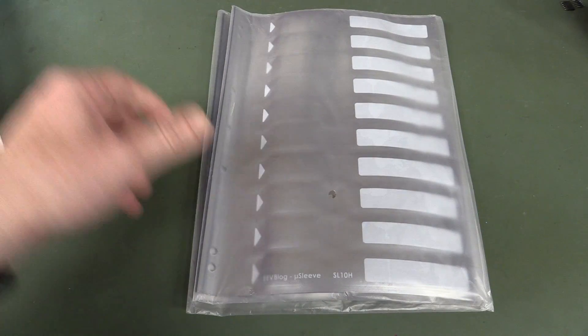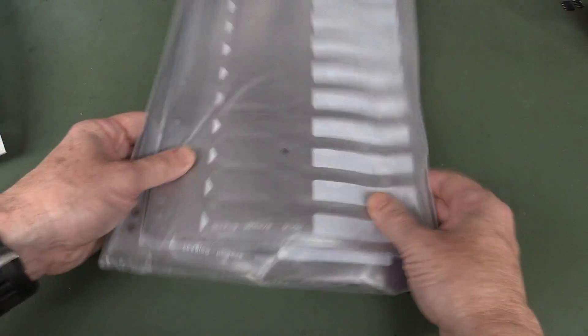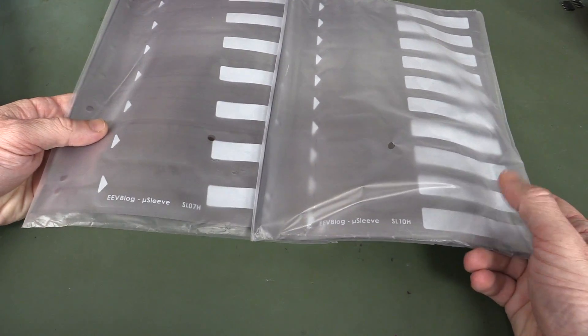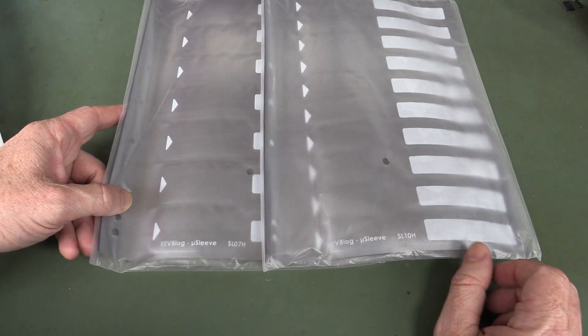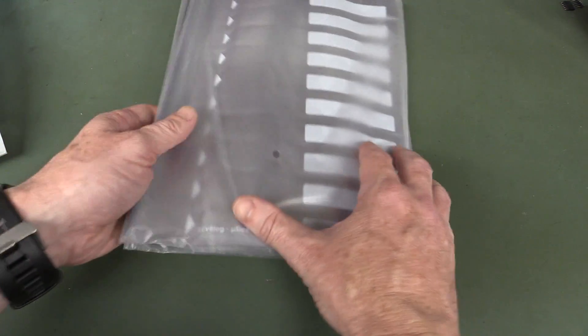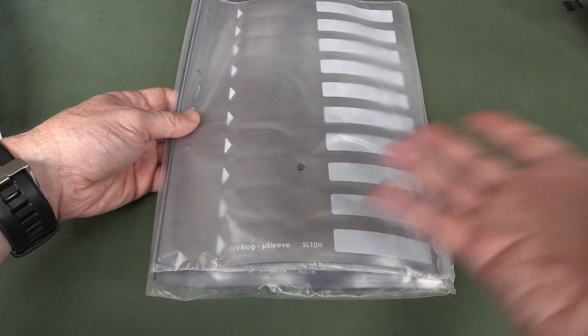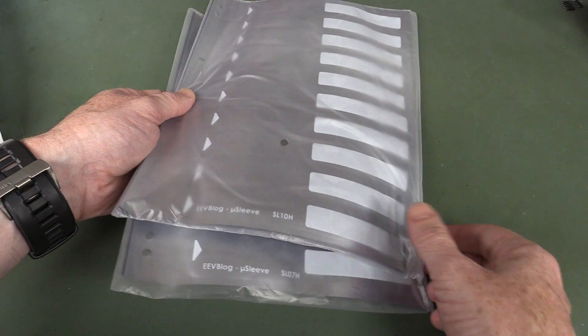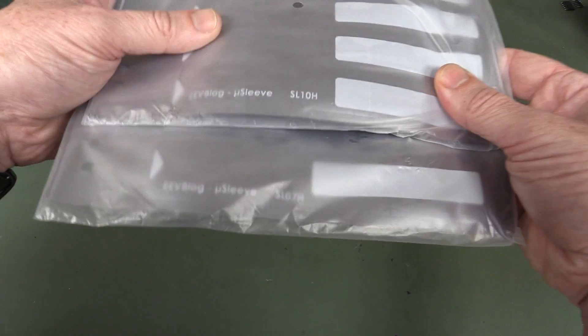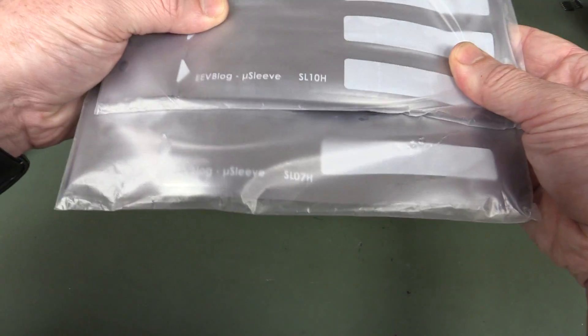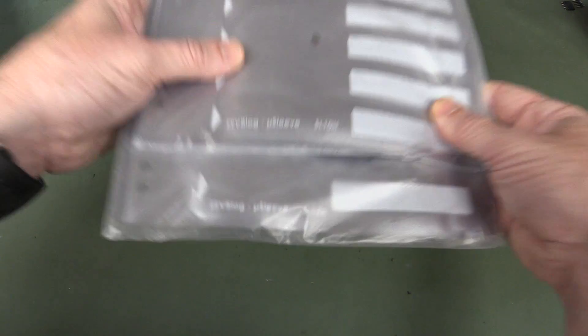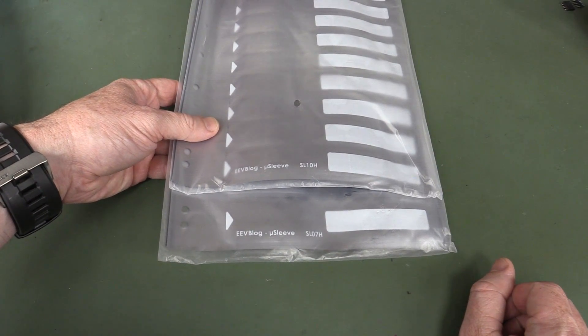So there you go, that's the micro sleeve, linked in down below if you want one. It's like a fixed price postage anywhere in the world, because they are flat, they do go in, they're just posted as a regular mail, a regular mail letter, that's the word I'm after, letter. So yeah there you go.